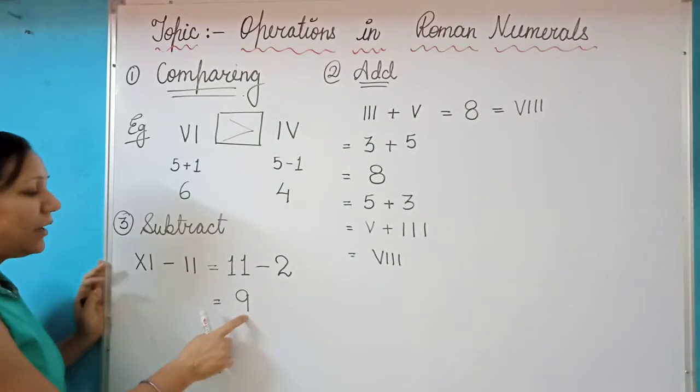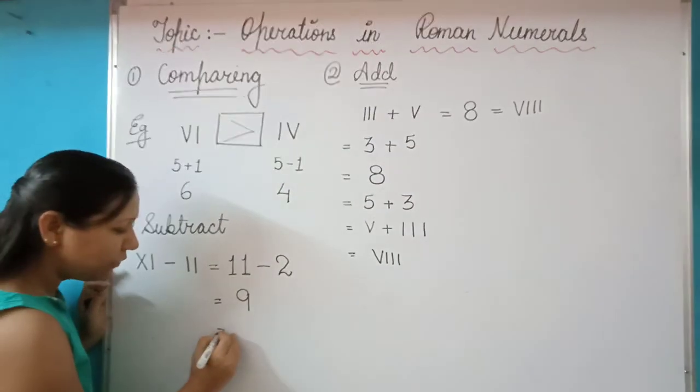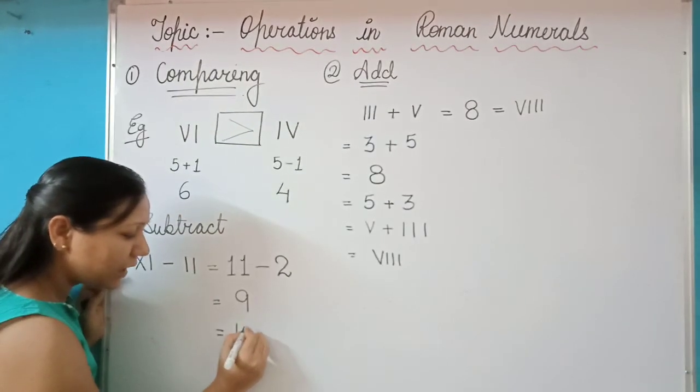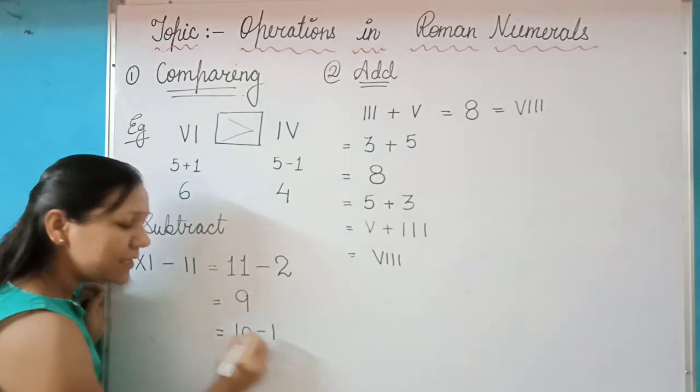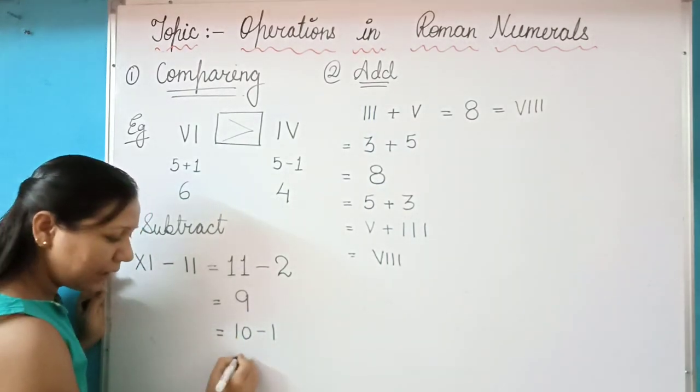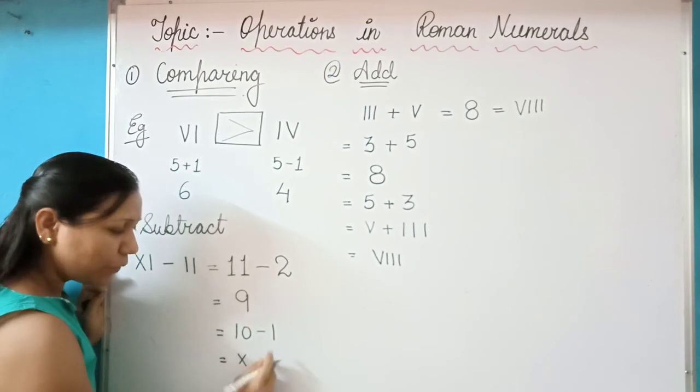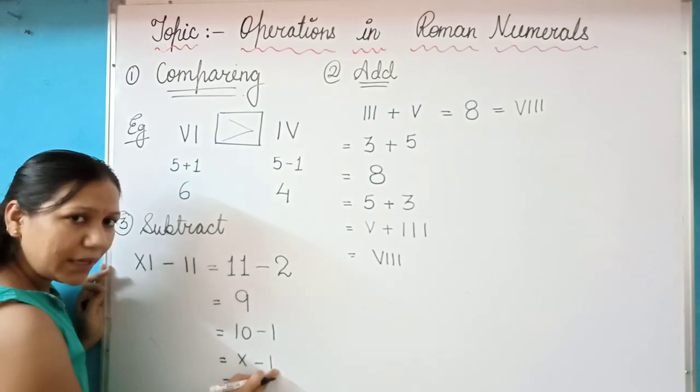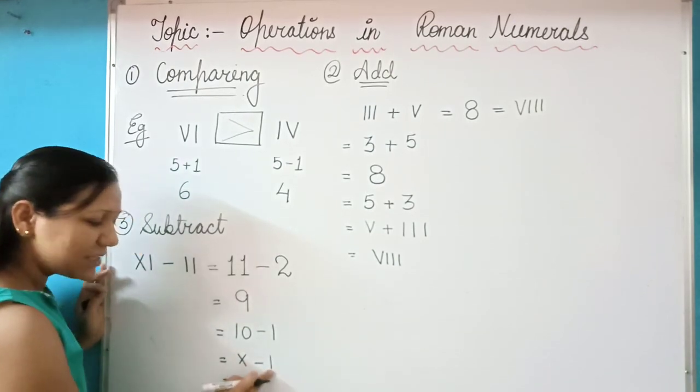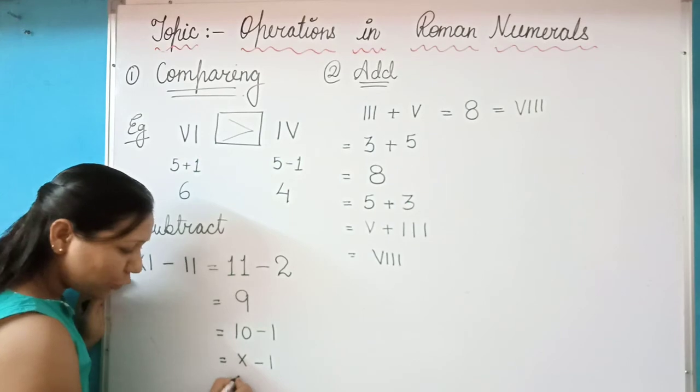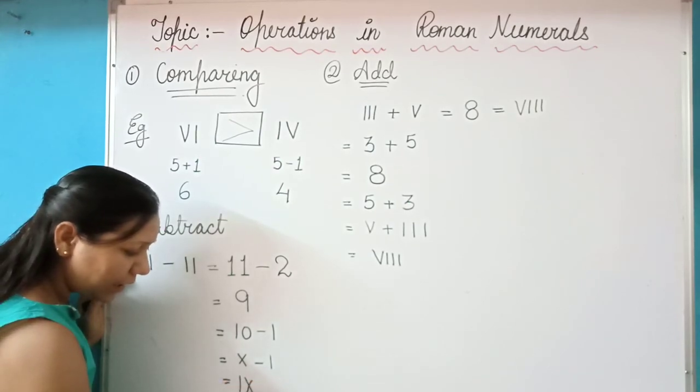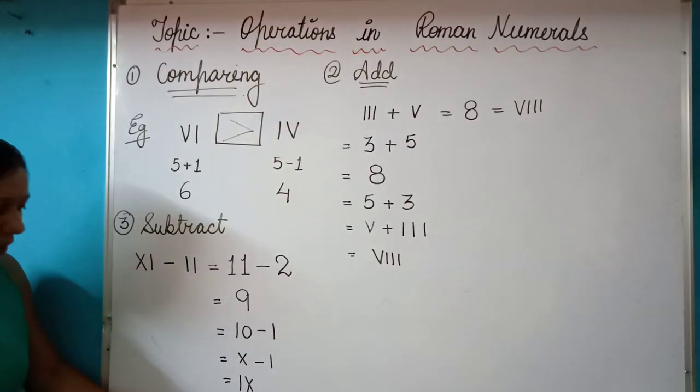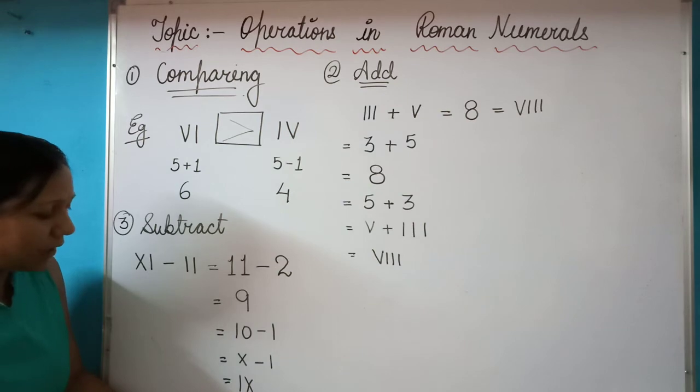Now, since we need our result once again in the Roman format, let us convert 9 into Roman format. For writing 9 into Roman format, I will write 10 minus 1. What is the symbol for 10? It is X and what is the symbol for 1? It is I. So, X minus I. We can write this X minus I where since there is subtraction, I will be written first and then it is the X. The answer for XI minus II is actually 9 which is represented by IX.